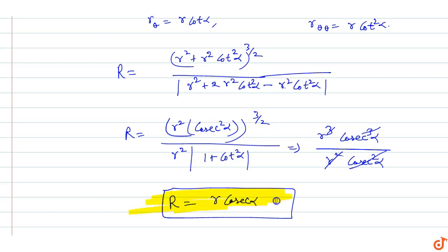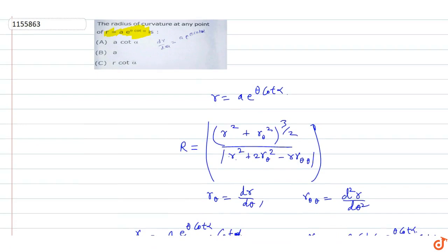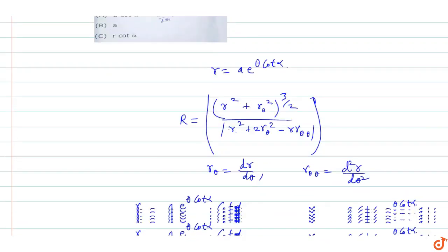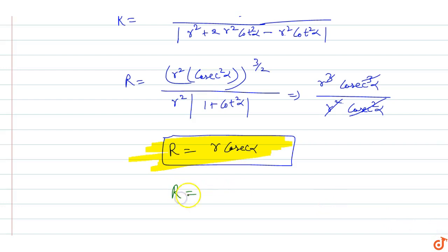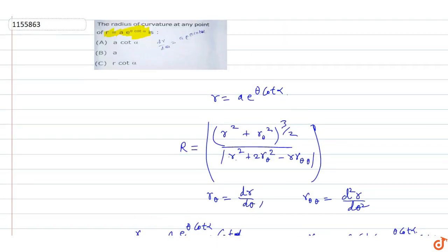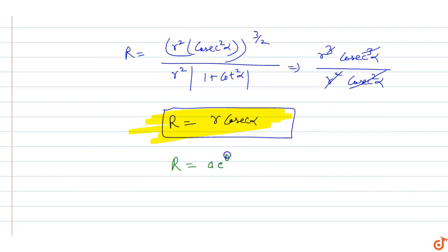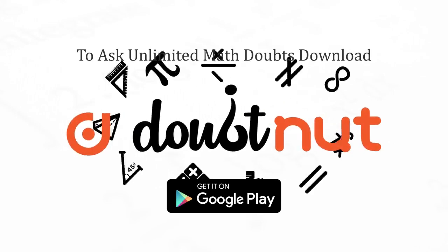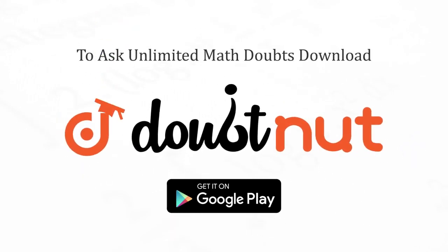So the radius of curvature at any point of r = a·e^(θ·cot α) equals r·cosec α. Here capital R (radius of curvature) expressed in terms of small r = a·e^(θ·cot α) gives ρ = a·e^(θ·cot α)·cosec α. This is the radius of curvature. Thank you.